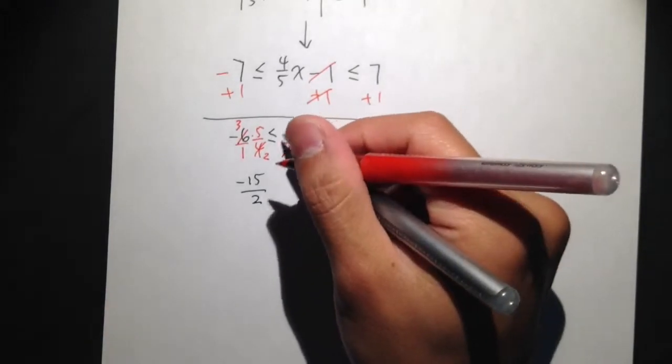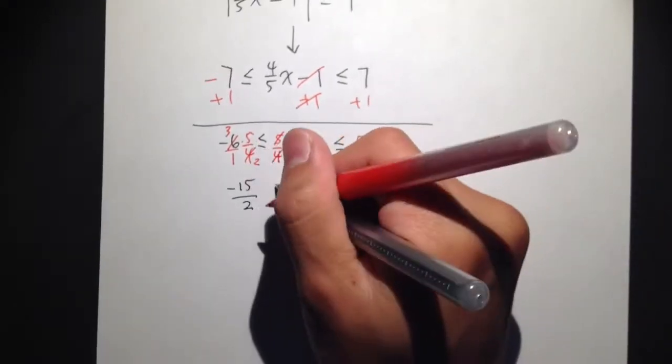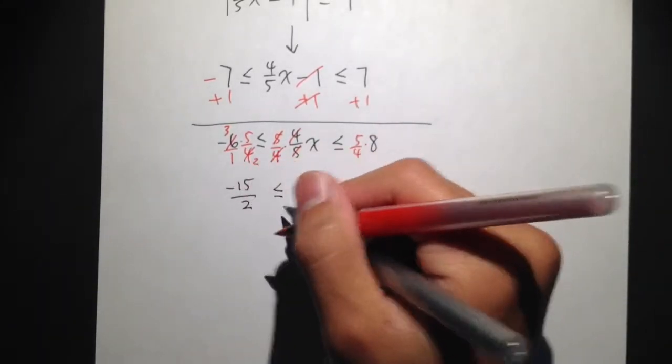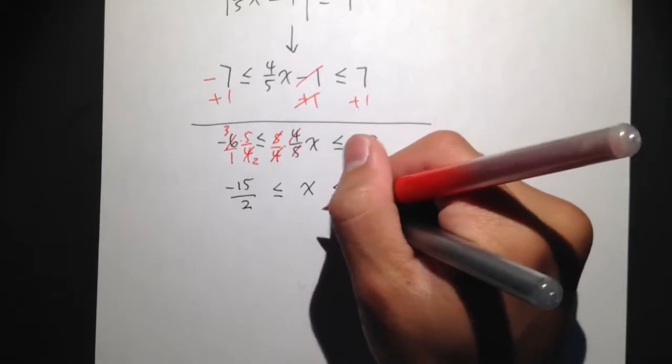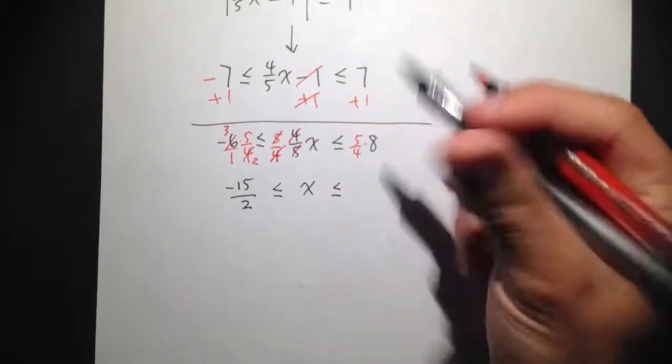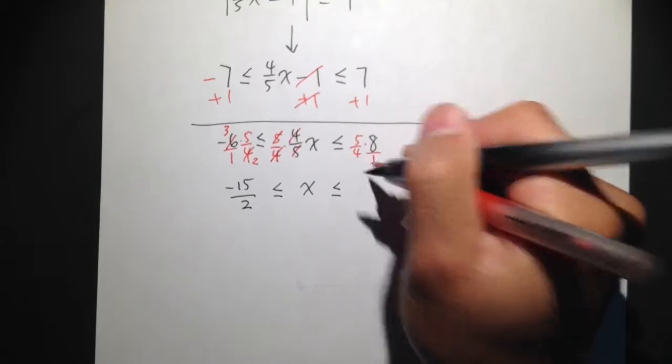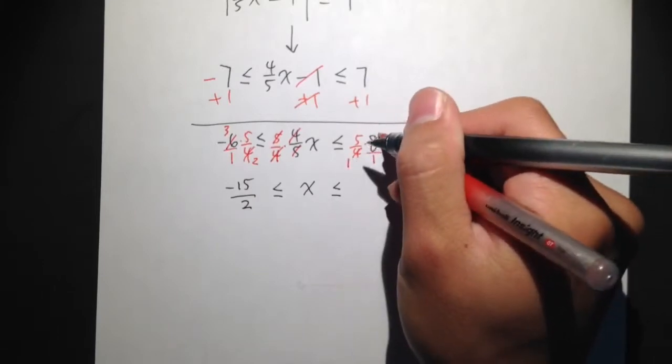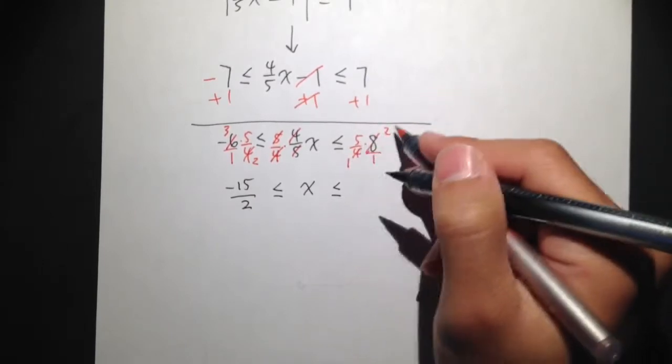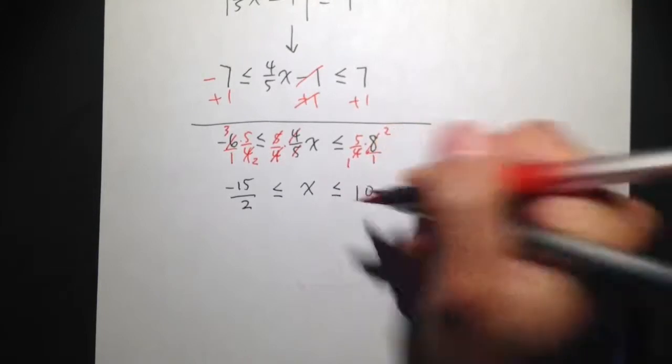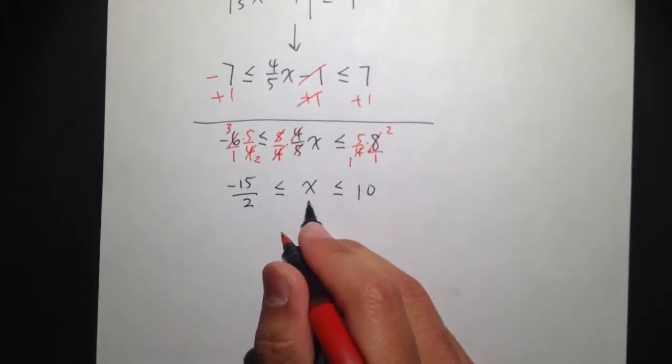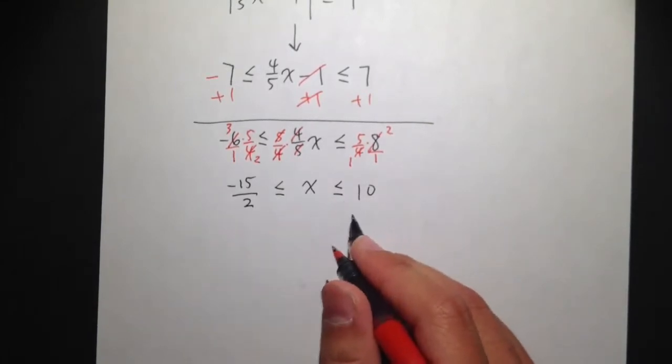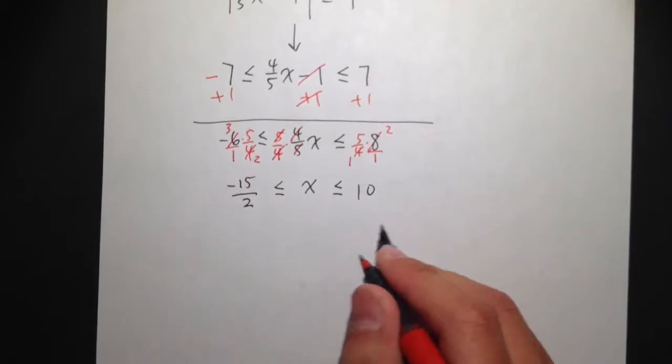And then since we multiply by a positive number, we didn't need to switch the inequality. So we just maintain this inequality, and then we also maintain this inequality. 5 over 4 times 8, we can write this as 8 over 1. Again, cross cancel, 4 goes into 4 once, 4 goes into 8 twice, and we just have 5 times 2, which is 10. So we did it, x is in the middle, and it's isolated, nothing else. In between of 2 numbers, and notice that the smaller number is on the left hand side. Perfect.